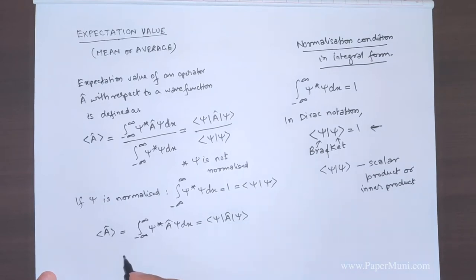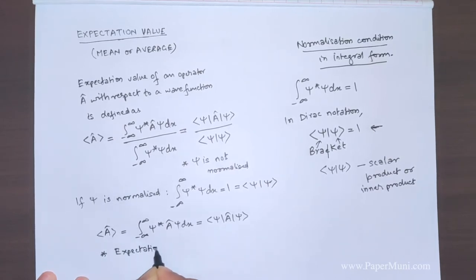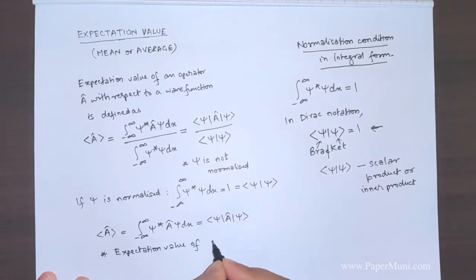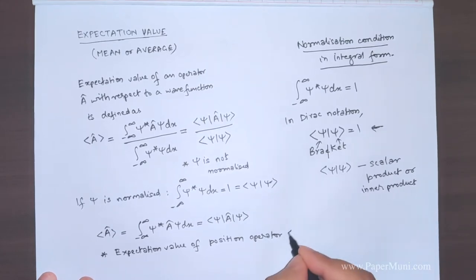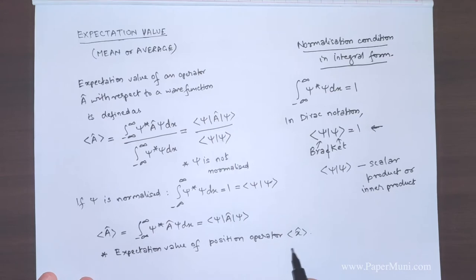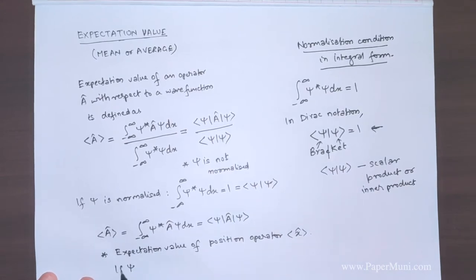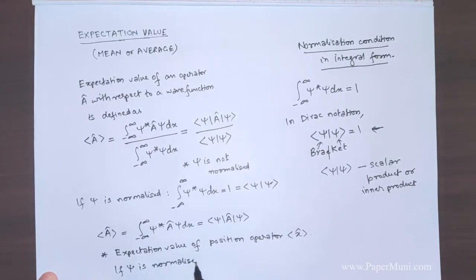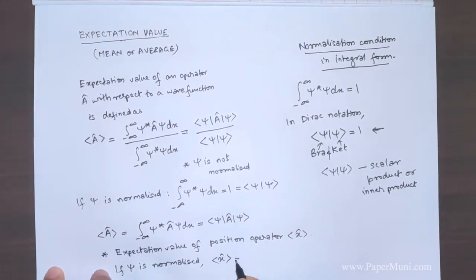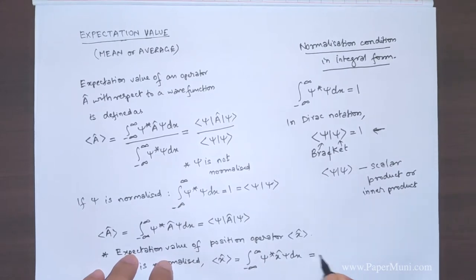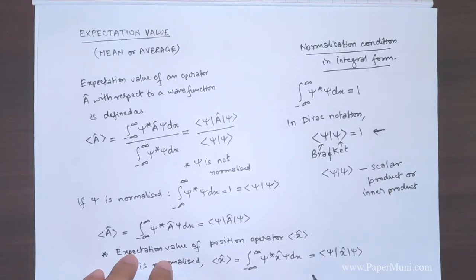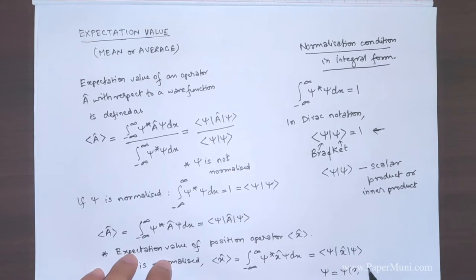Now let's write down the expectation value of the position operator. The position operator is x-hat, enclosed within angle brackets. Assuming psi is normalized, the expectation value of x is given by the integral from minus infinity to plus infinity of psi-star times x times psi dx, which equals bra-psi x ket-psi, where psi is a function of both x and t.